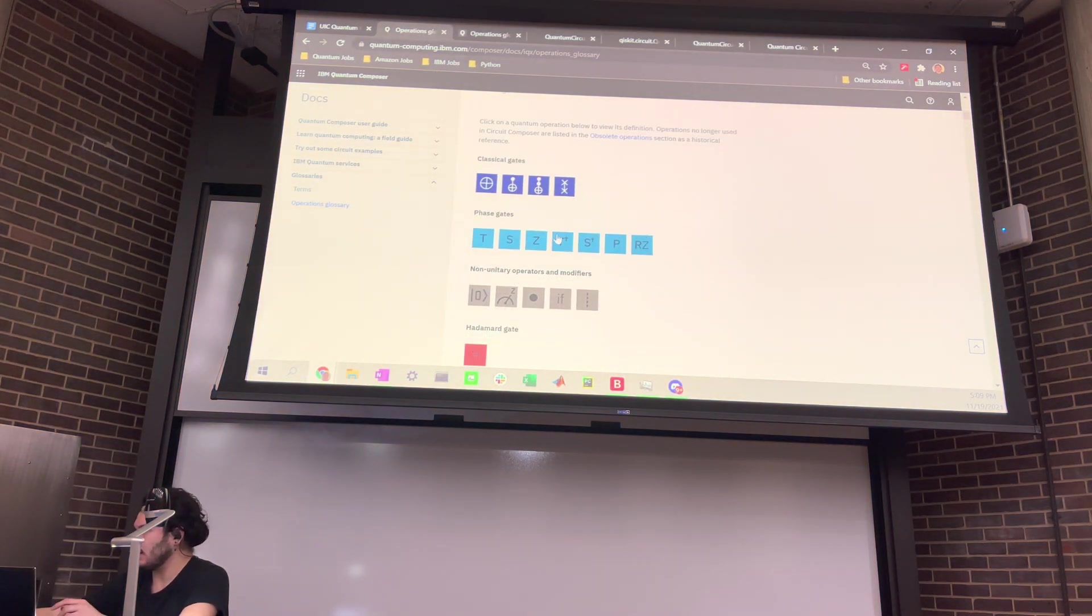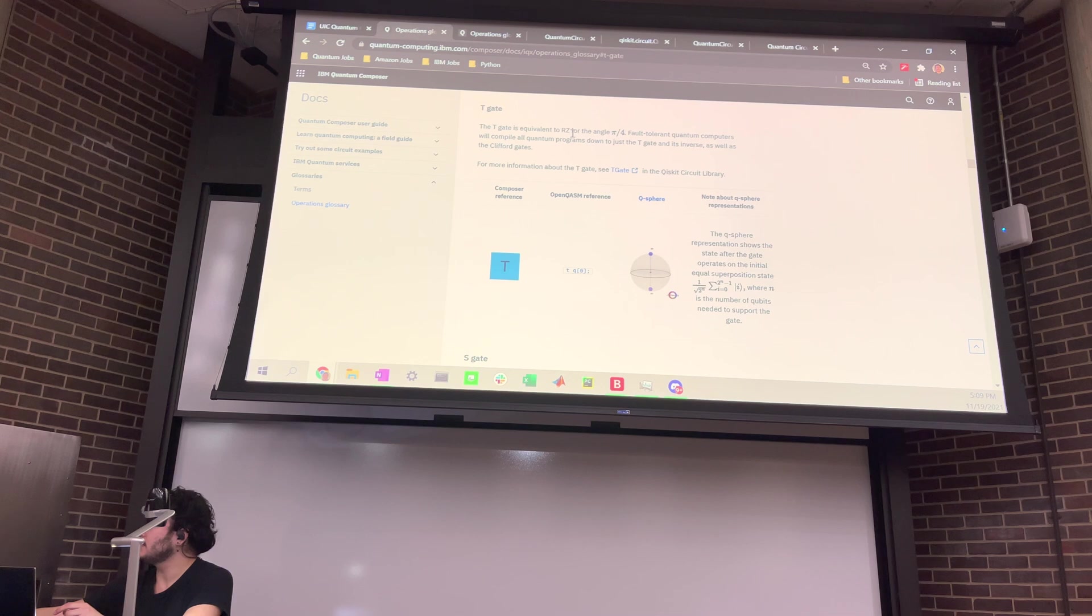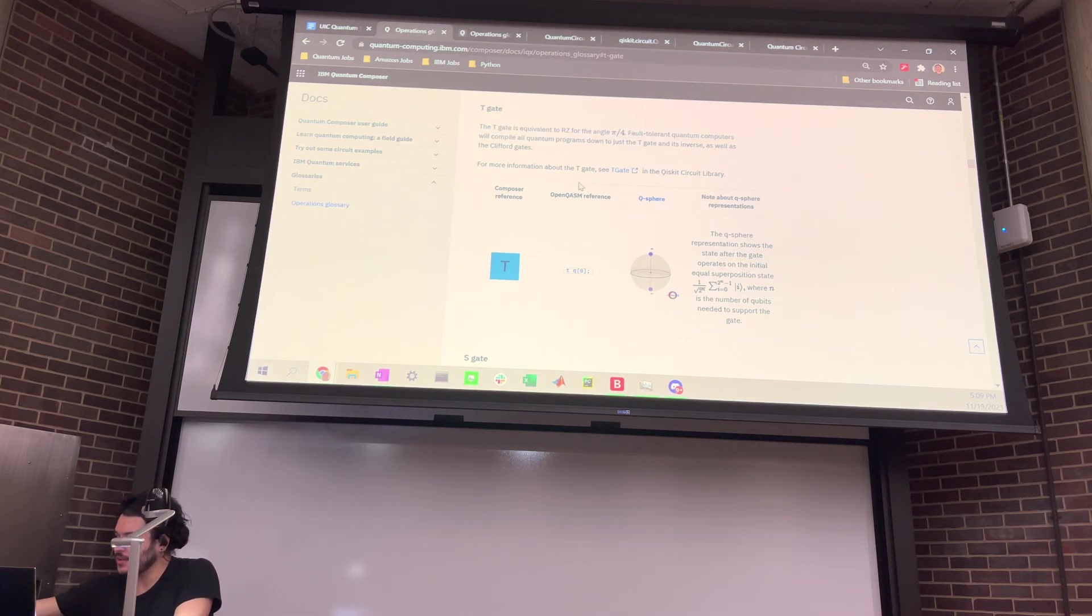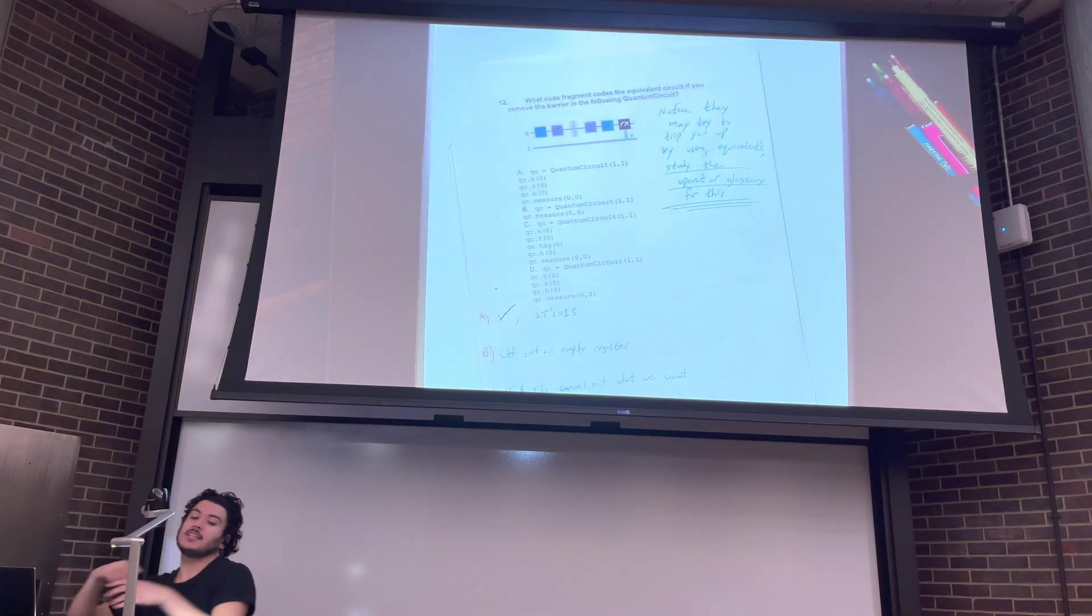So we're going to go down here. It's actually clickable. So T, be careful not to confuse it with T dagger. They're different. So T gate is an equivalent to RZ for angle of pi over four. So we're going to go back to the paper here. And we're going to see what kind of tricks they try to do.